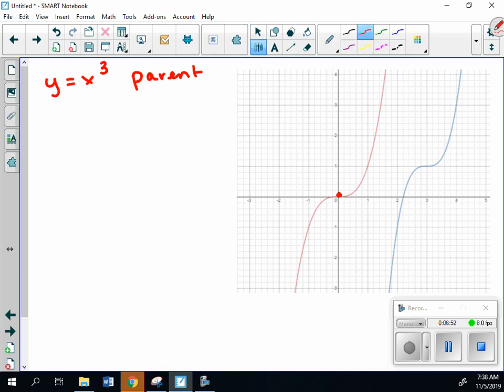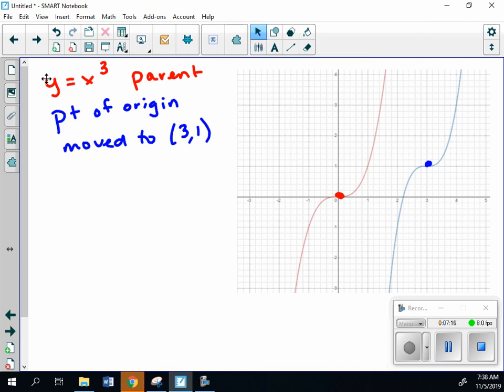My point of symmetry originally is here at 0, 0. So I need to figure out it shifted to here. The point of origin moved to 3, 1. Similar to when we were doing quadratics and we're talking about how that vertex is shifting, similar concept here in which we know it's going to be x minus 3 cubed plus 1. Remember, inside that parentheses, it goes opposite of what we see. Since it was a positive 3, it goes x minus 3.